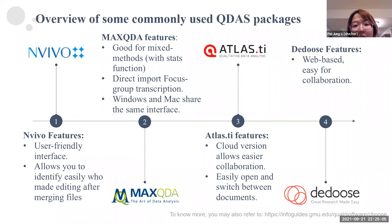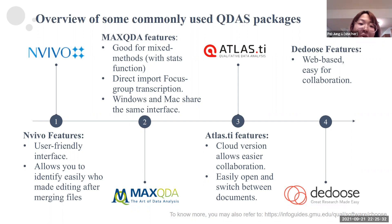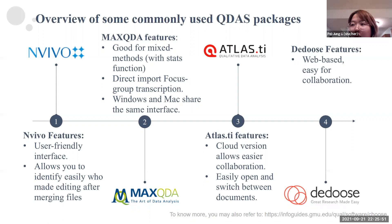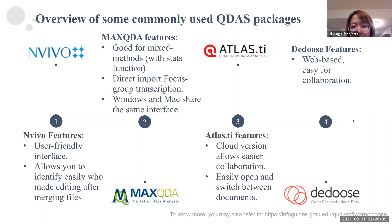With MaxQDA, you can create your own variables, or directly import focus group transcriptions. For example, if you edited your transcription with speaker columns, the software will directly identify and auto-code for you, giving you a first layer of familiarity with your data. Also, a great feature is that the Windows and Mac systems share the same interface, so when working with different qualitative researchers it's easy to communicate and view each other's screens without difficulties navigating MaxQDA's interface.